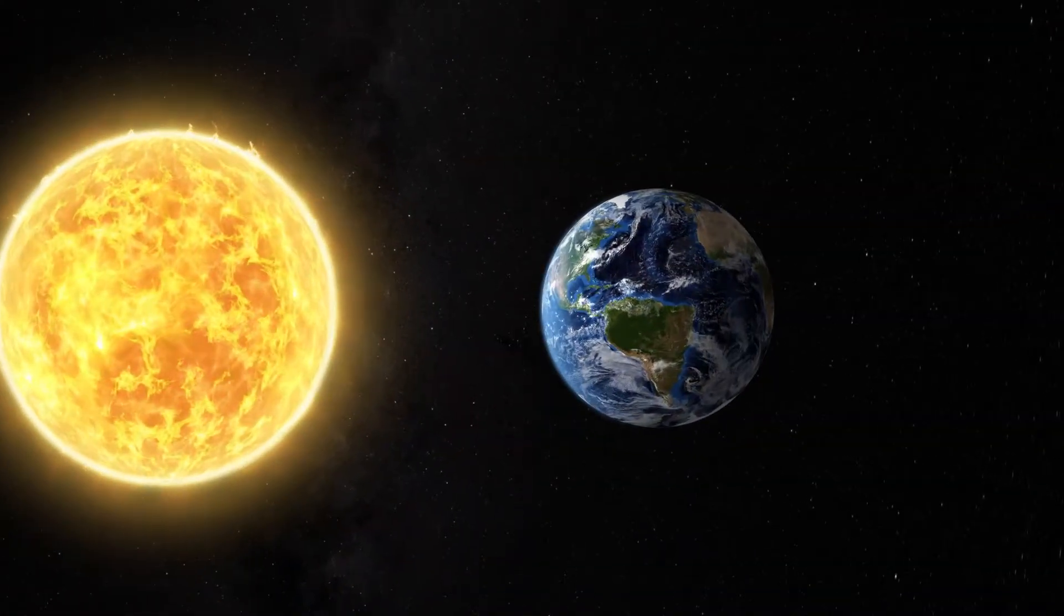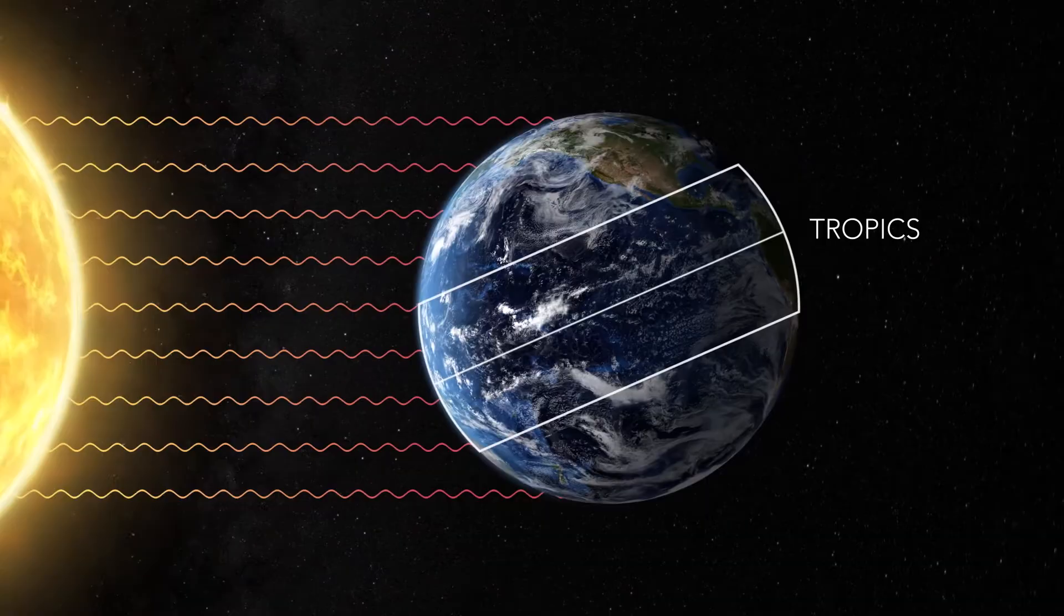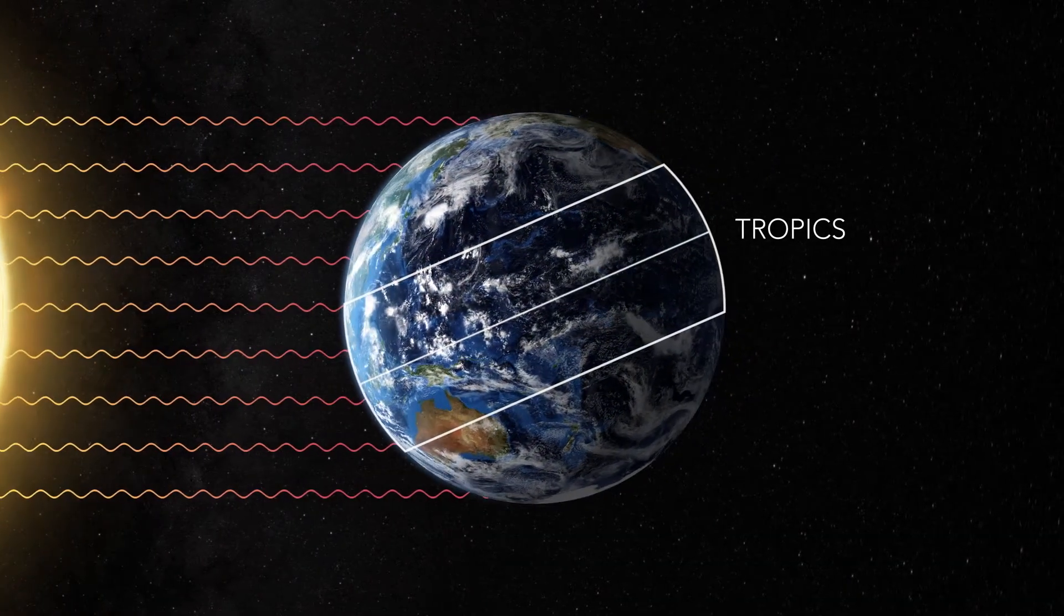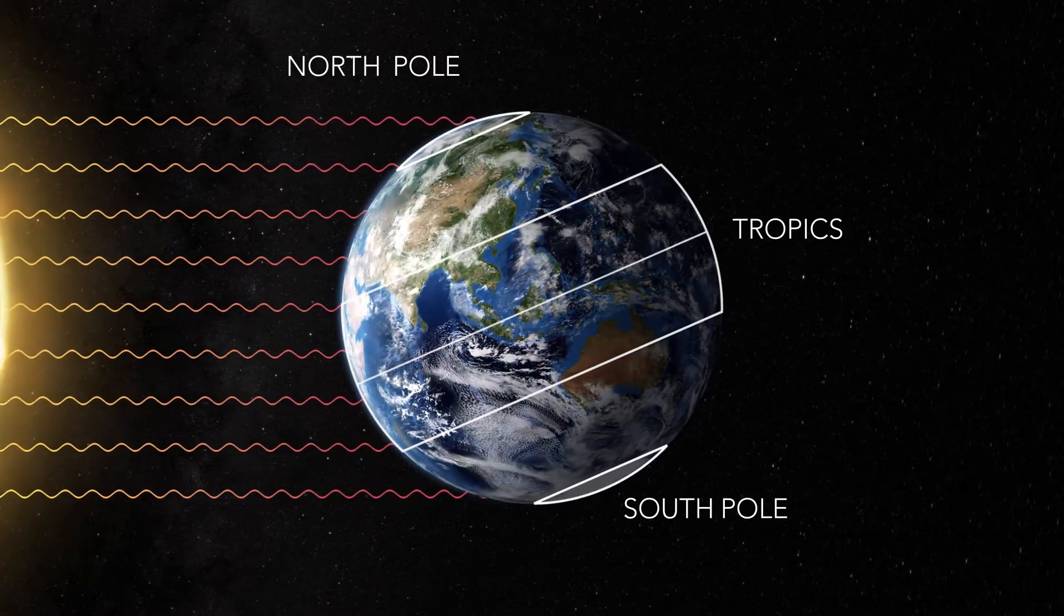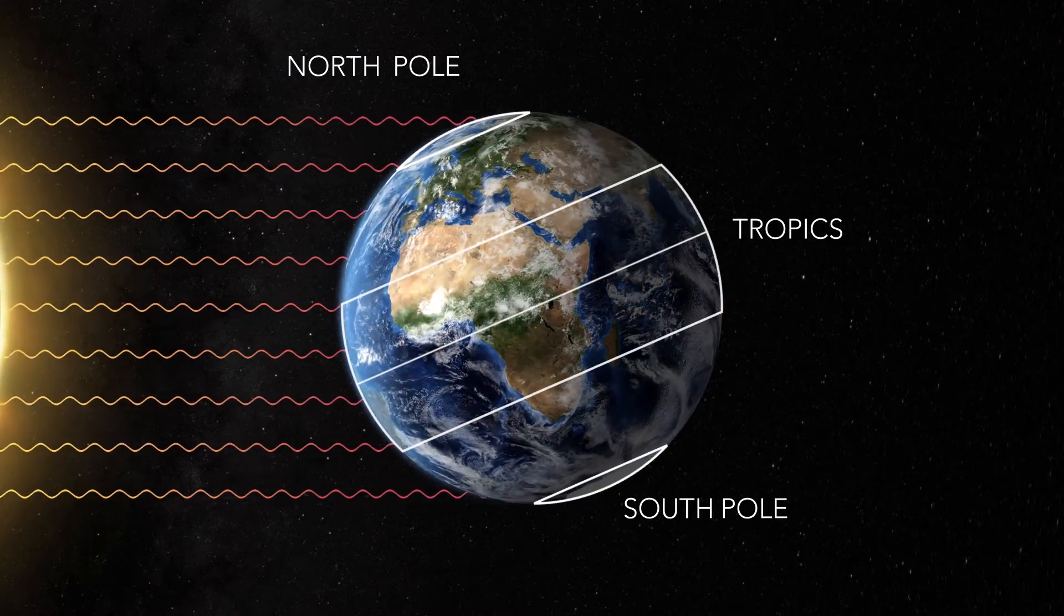So why do the atmosphere and ocean move the way they do? The sun's radiation doesn't hit the Earth evenly. The tropics receive direct energy from the sun year-round, while the poles not only get less direct solar radiation, but also spend part of the year not getting any direct solar radiation at all.